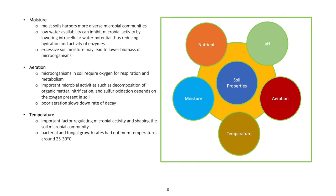Moisture. Moist soils harbor more diverse microbial communities. Low water availability can inhibit microbial activity by lowering intracellular water potential, thus reducing hydration and activity of enzymes. Excessive soil moisture may lead to lower biomass of microorganisms.